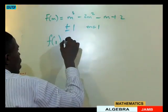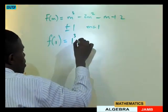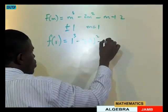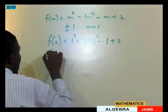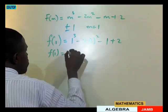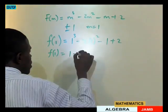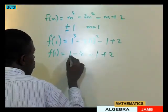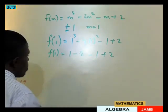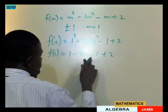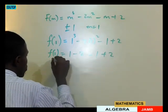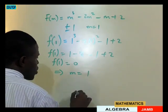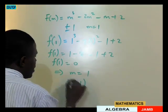Computing f of 1: we get 1 cubed minus 2 times 1 squared minus 1 plus 2. That is 1 minus 2 minus 1 plus 2, which equals minus 2 plus 2, giving 0. Since f of 1 equals 0, this means m equals 1 is a solution and m minus 1 is a factor.